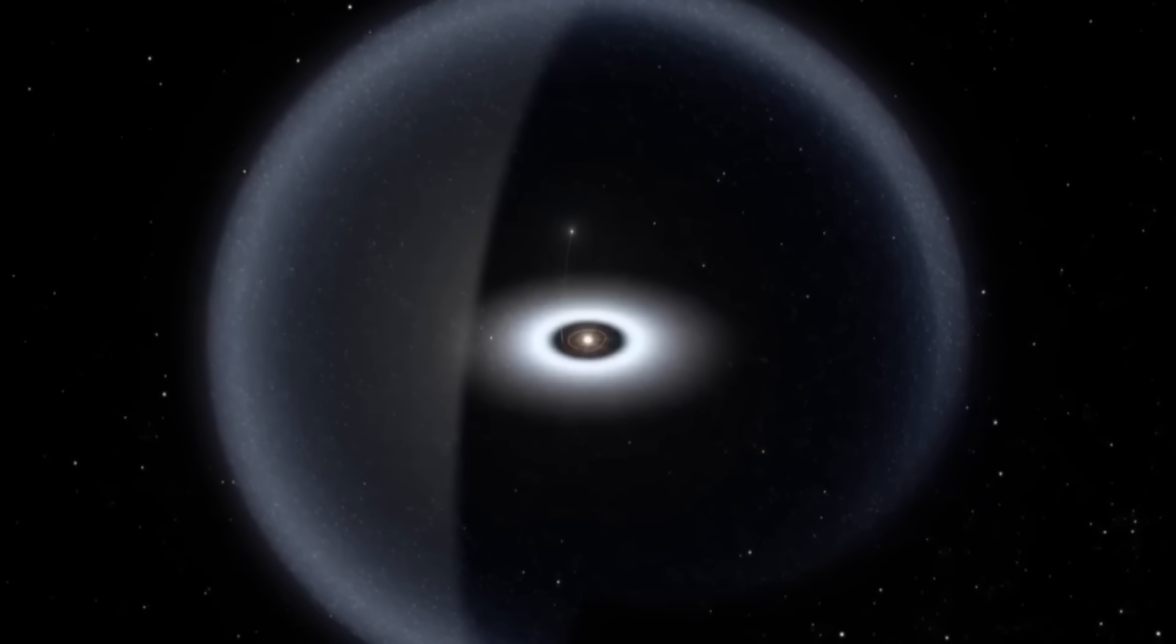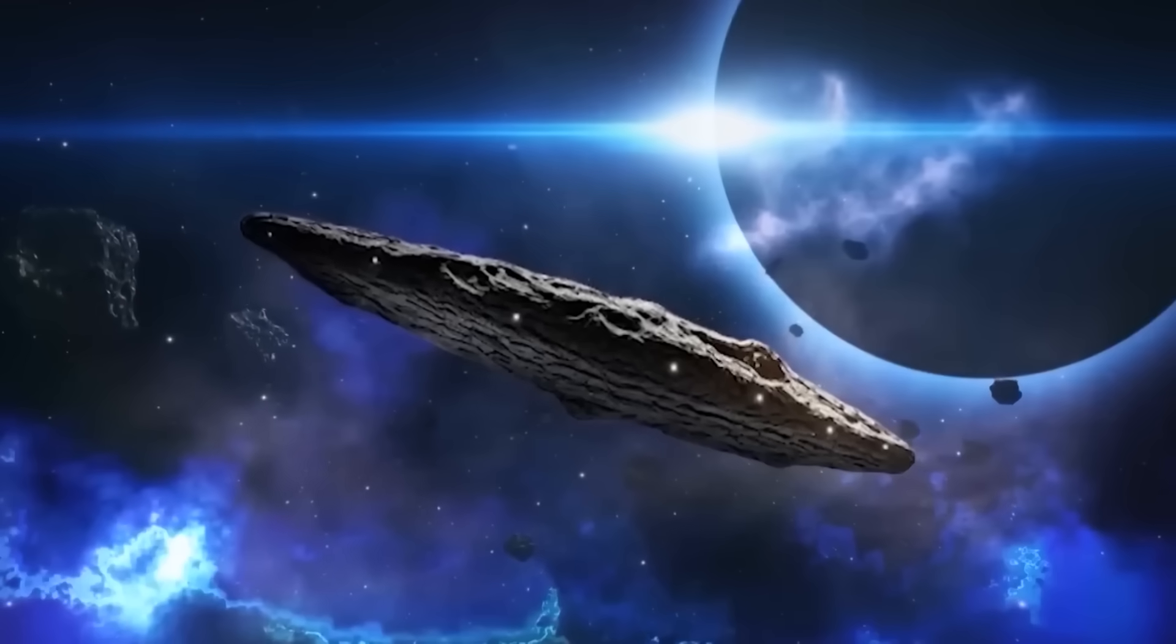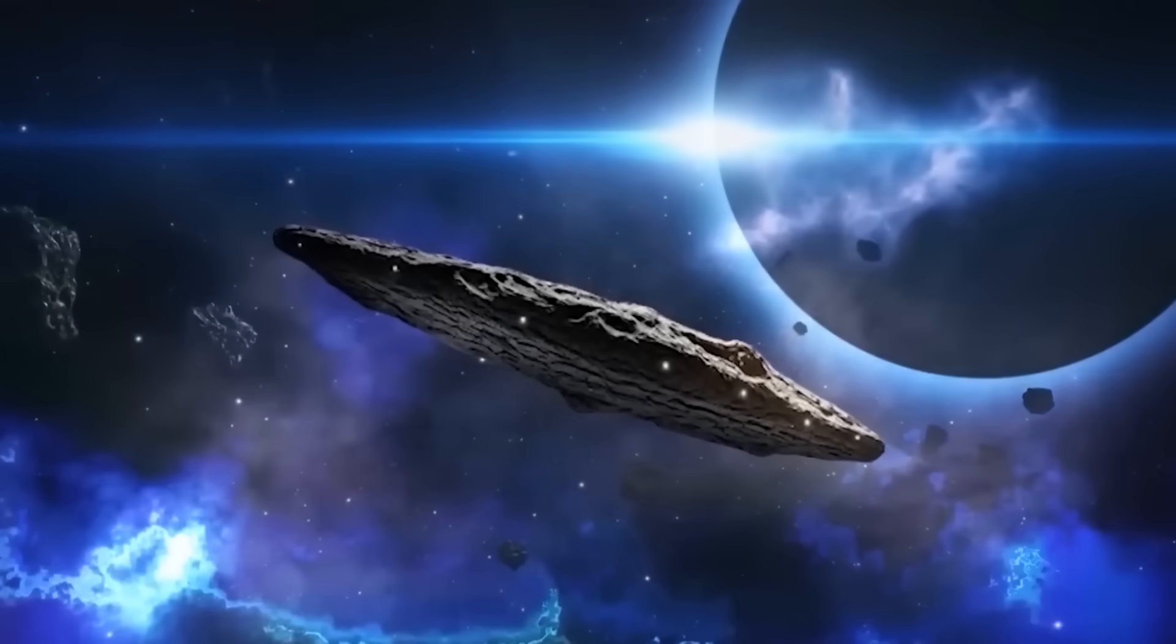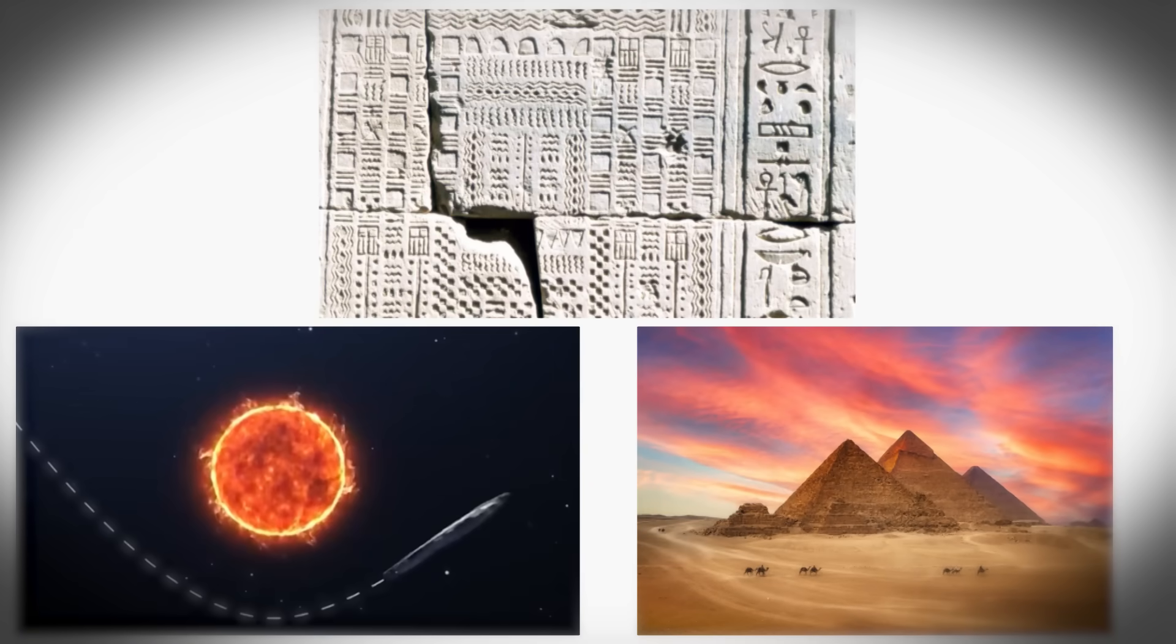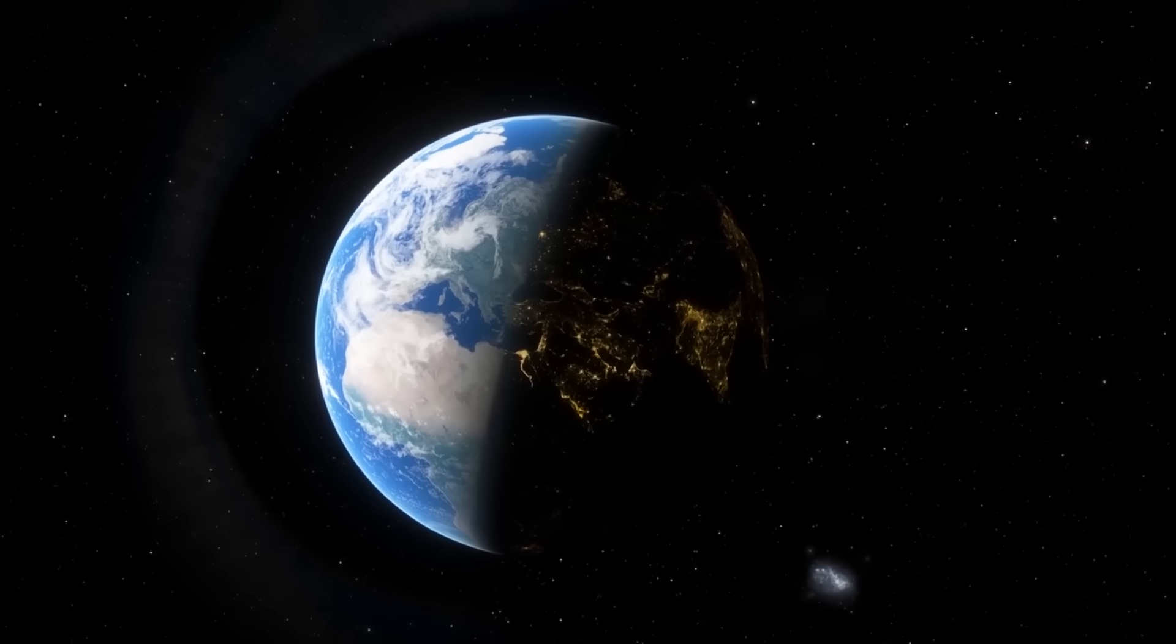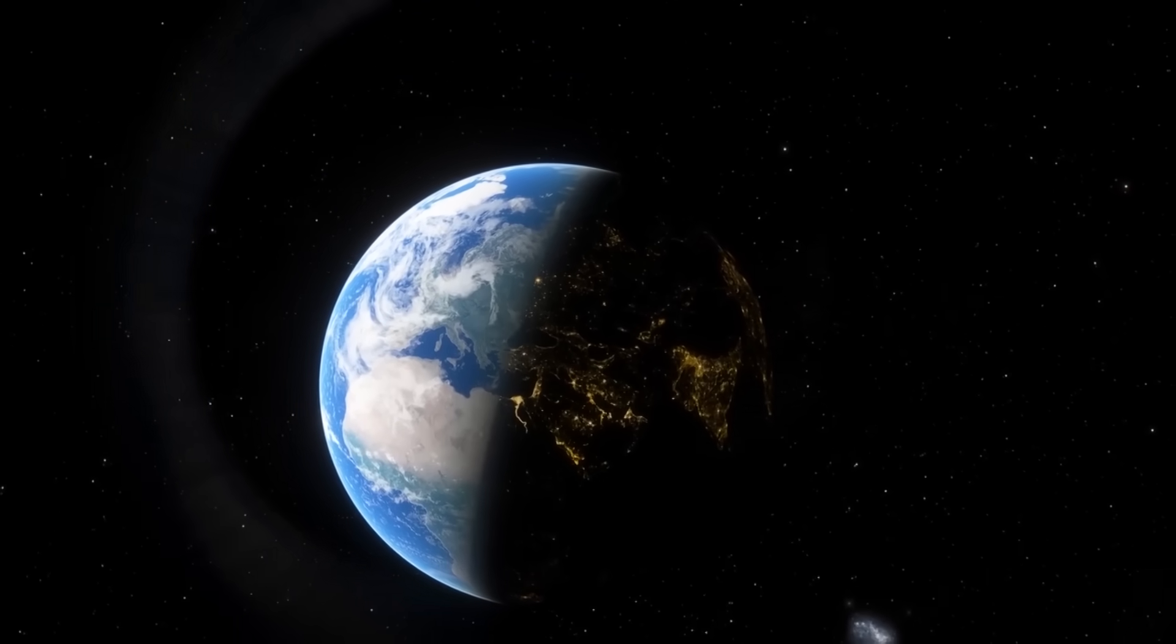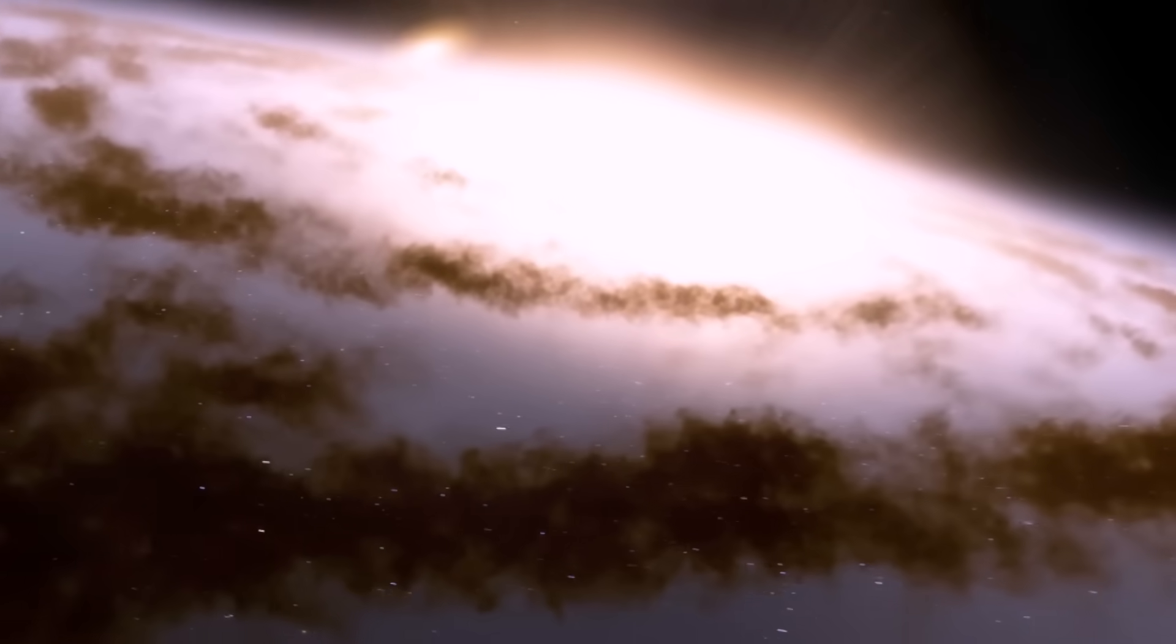They may have understood that it would return, not in years or centuries, but in cycles so long that they needed to carve the memory into stone itself, leaving a message for distant descendants who might be alive to see it again. The pyramid shafts, the stone circles, even ancient calendars tracking precession could be more than cultural curiosities. They might be beacons warning us when the next cycle begins, when the sky will once again host these great travelers.